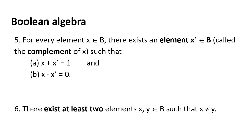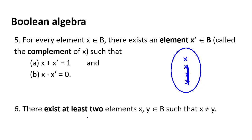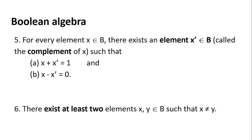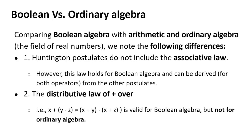The final postulate is straightforward: there must be at least two elements in Boolean algebra such that the two elements are not the same. You cannot have just one element repeated — that would still be one element. Apart from one element there must be another distinct element. With only one element you cannot do anything with Boolean algebra.